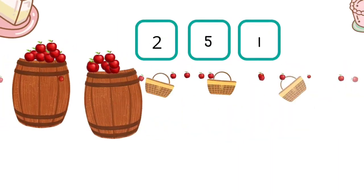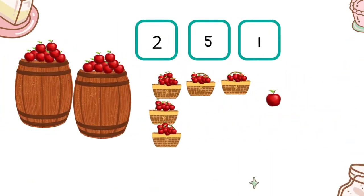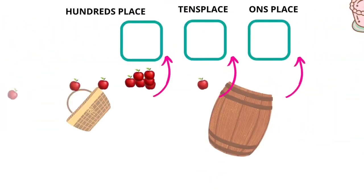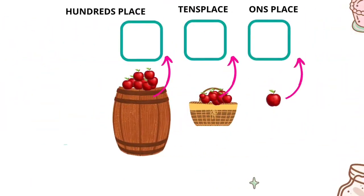We add new number places to count larger groups, placed to the left of the previous number place. Number places are always arranged in the exact same order, starting with the ones place. As we move to the left, the number places represent larger and larger amounts. Each number place represents a group that is exactly 10 times bigger than the previous one — 10 is 10 times bigger than 1, and 100 is 10 times bigger than 10.